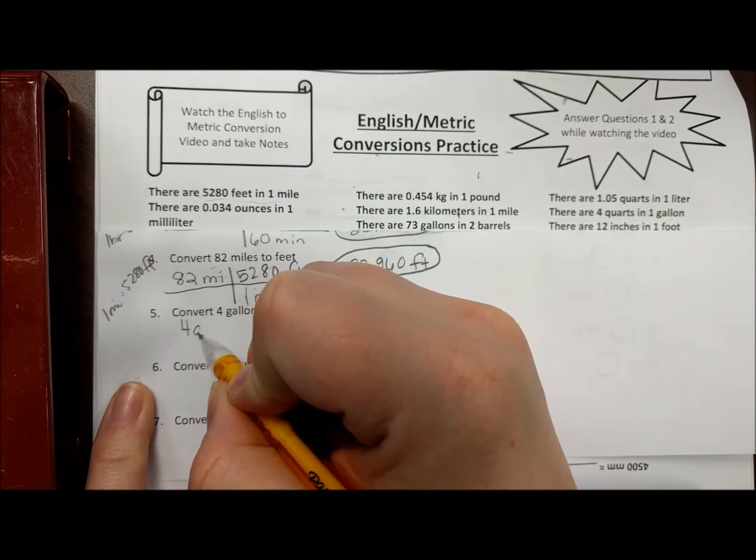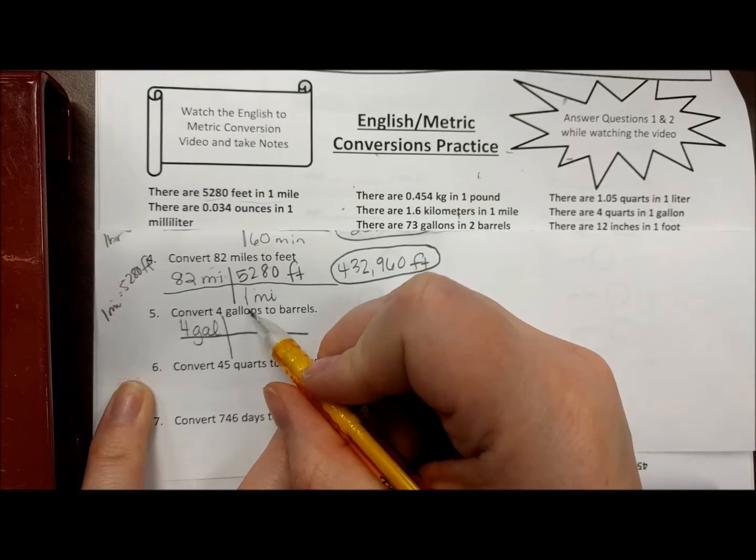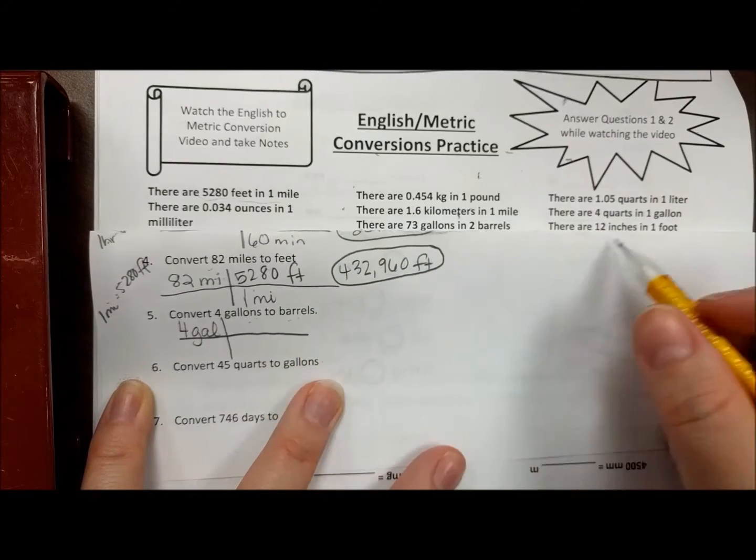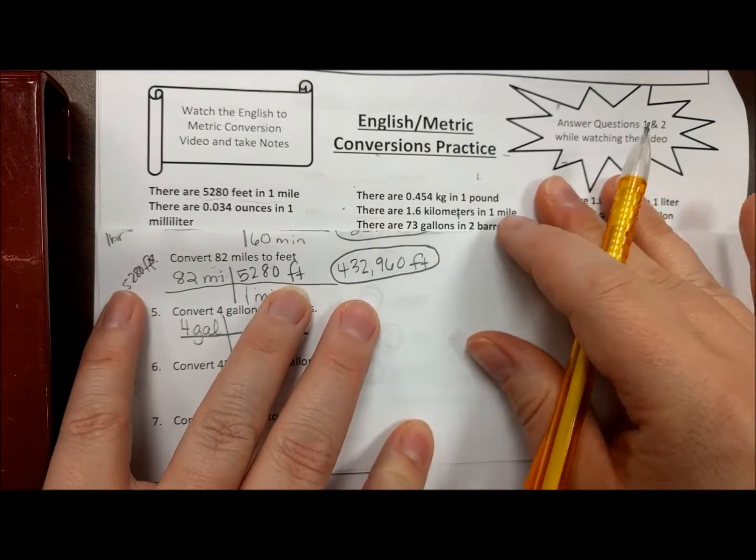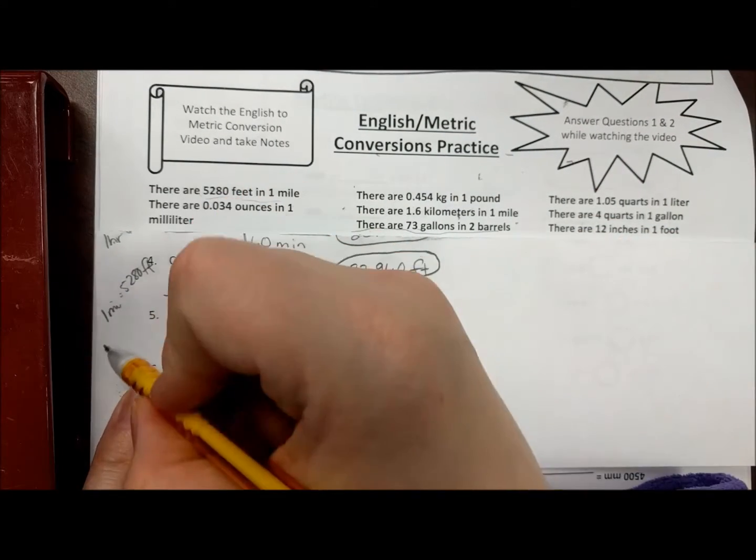And here we go, right here: there are 73 gallons in two barrels.